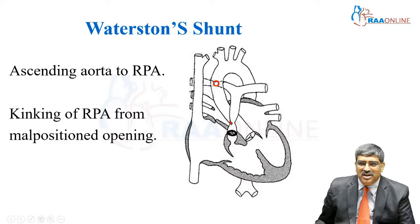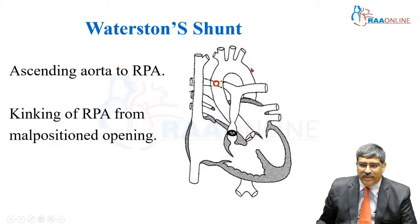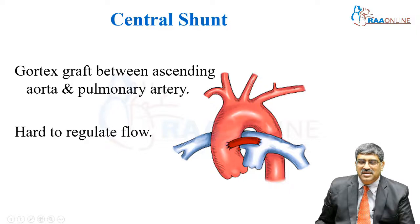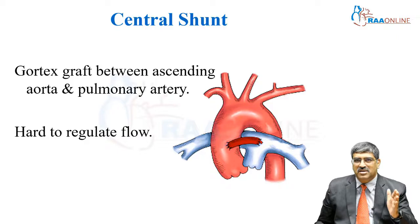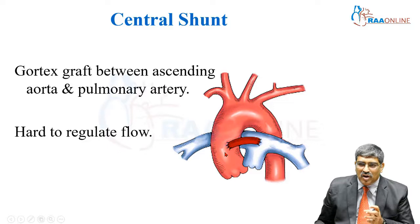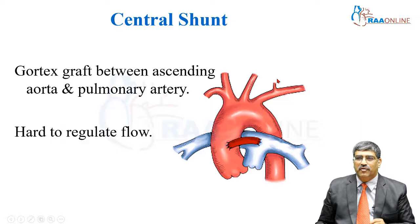Coming to the Waterston shunt: this is the ascending aorta and this is the right pulmonary artery. You perform a side-to-side anastomosis of the ascending aorta to the right pulmonary artery, but the problem here is there may be kinking of the right pulmonary artery from the small port opening. Coming to another major shunt — the central shunt — where you place a Gore-Tex graft between the aorta and the main pulmonary artery. For the Potts shunt, Waterston shunt, and central shunt, it is going to be difficult to regulate the flow because you are creating a conduit between the aorta and the pulmonary artery.